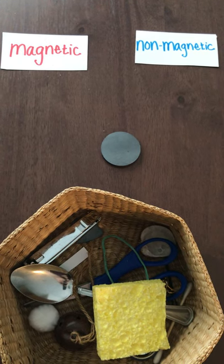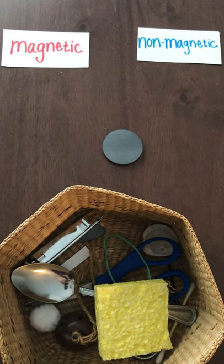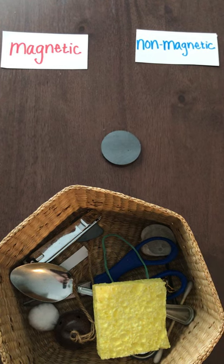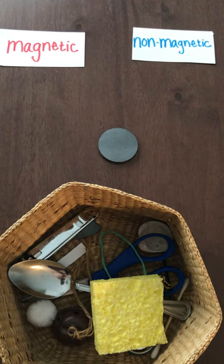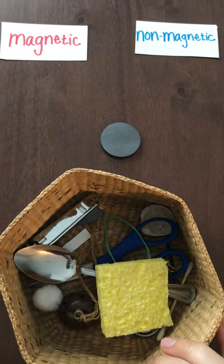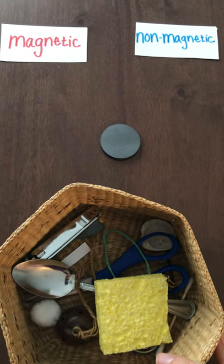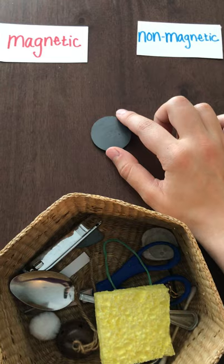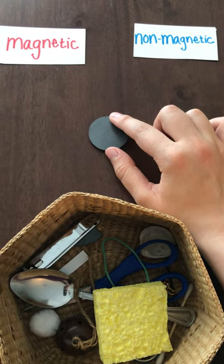Hi everybody! I hope everyone's doing good. Today in this video we're going to sort magnetic and non-magnetic items. I have a basket here full of items that I had around the house and then I have my magnet here. So let's go through the first one.